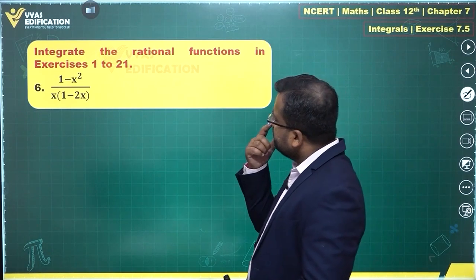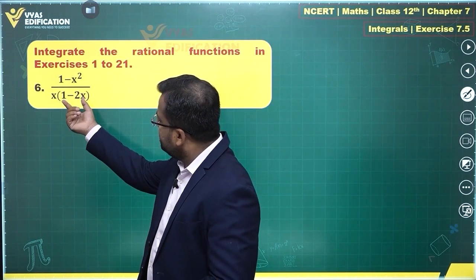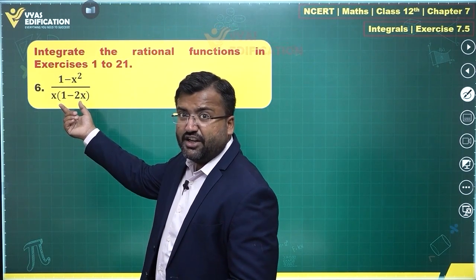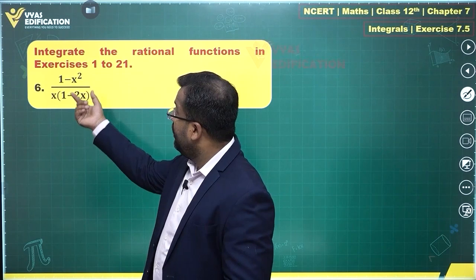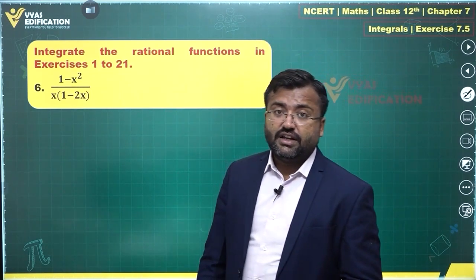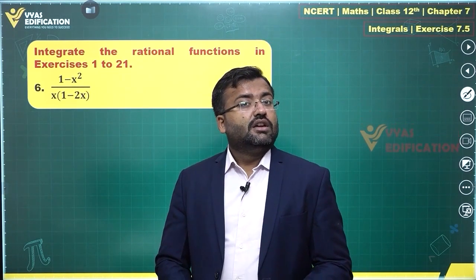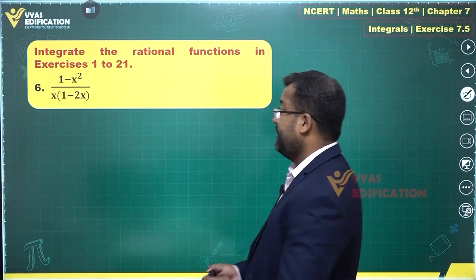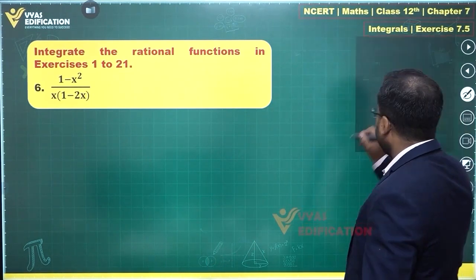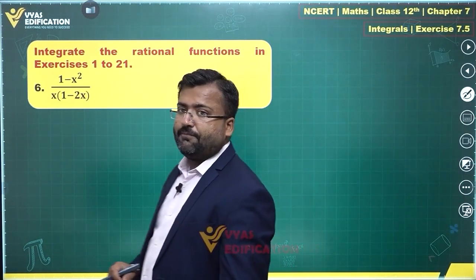If I observe the degree of the denominator, that's x square, so the degree is 2. Here in the numerator we also have x square, so the degree of the numerator is also 2. Since the degrees are equal, we'll have to divide first.